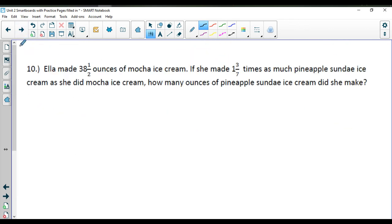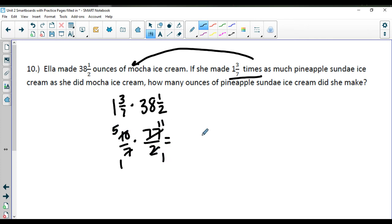And finally question number 10 on this page. Ella made 38 and a half ounces of mocha ice cream. If she made 1 and 3 sevenths times as much pineapple sundae ice cream as she did mocha, how many ounces of pineapple sundae ice cream did she make? So she made this many times what her mocha was. So we're going to be doing 1 and 3 sevenths times 38 and a half for the ice cream here. 7 times 1 plus 3. 2 times 38 plus 1. And we are going to reduce here. The 7 and the 77 are both divisible by 7. The 2 and the 10 are both divisible by 2. 5 times 11 is 55 over 1, which is going to be 55 ounces of the pineapple sundae ice cream.